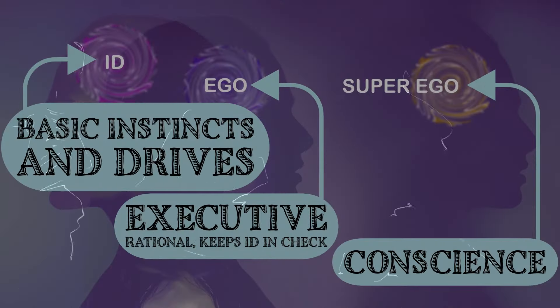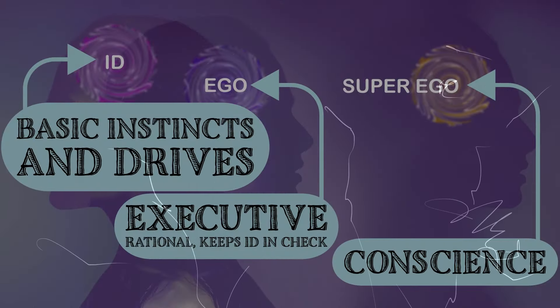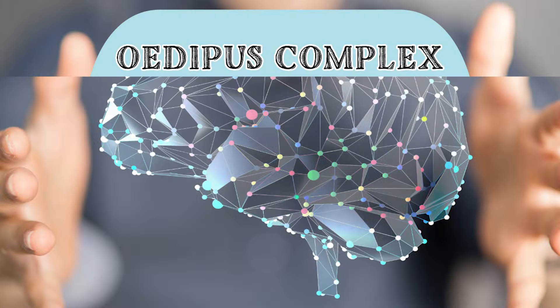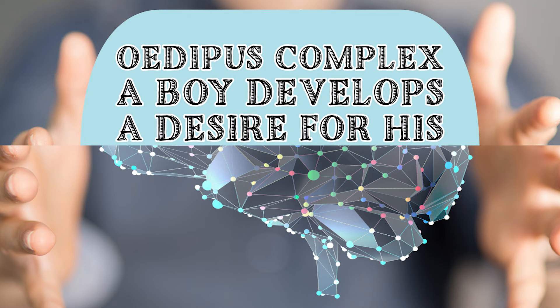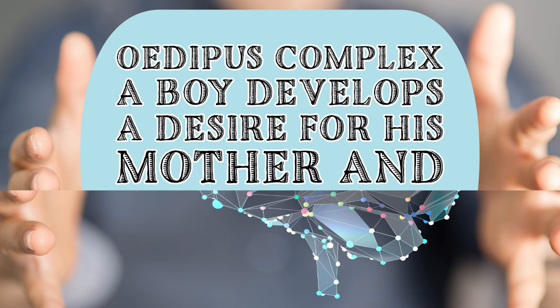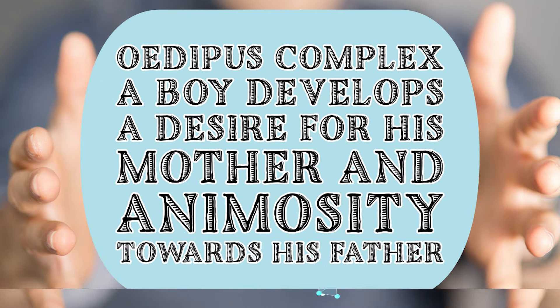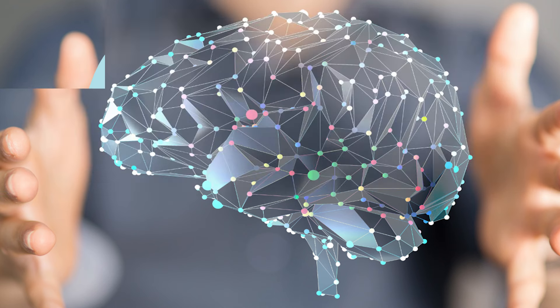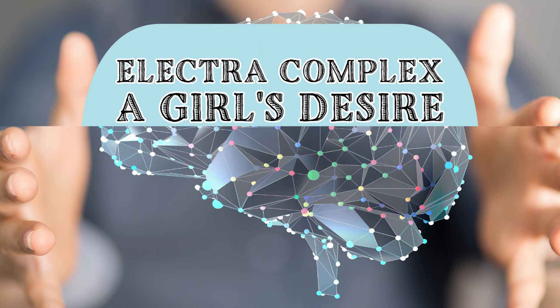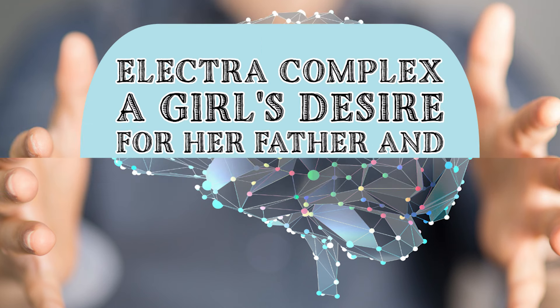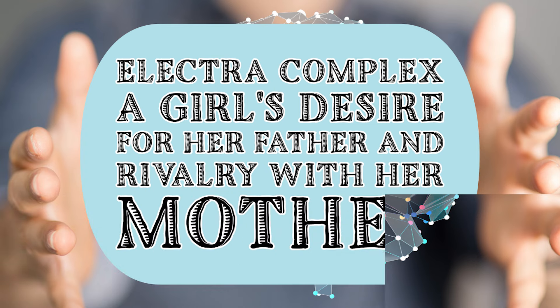An improper fixation during development creates a conflict between the id, ego, and superego. This conflict may manifest in various forms, such as the Oedipus complex, where a boy develops a desire for his mother and animosity towards his father, or the Electra complex, involving a girl's desire for her father and rivalry with her mother.